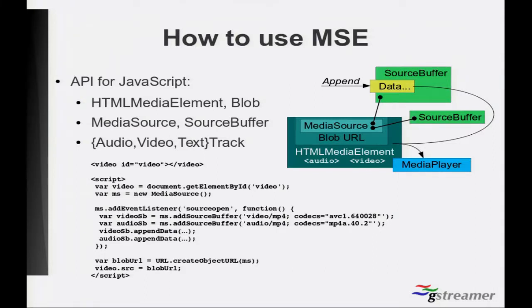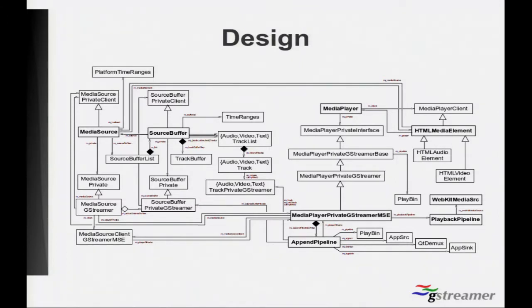So, how is all of this implemented? All the things that are accessible from JavaScript are actually mapped from C++ objects internally inside WebKit. The framework has two parts — one multi-platform part, which is common to the Apple port, the WPE-GTK port, and WPE ports — and then one port-specific part, which I will explain later.